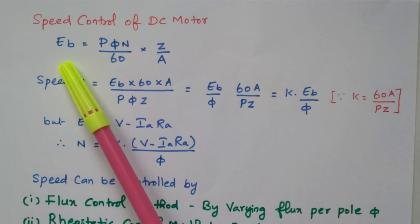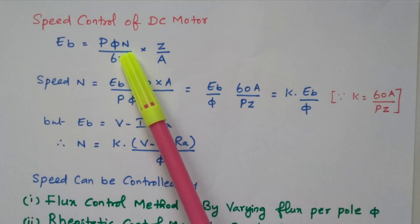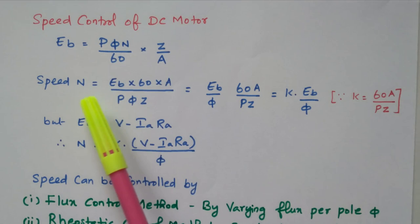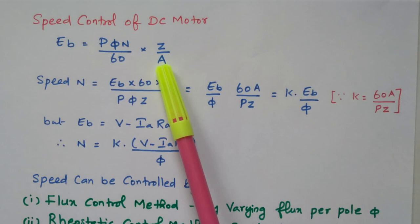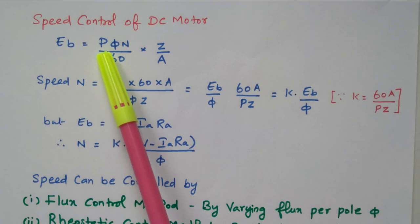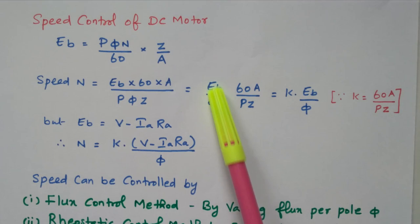Now we will see the expression for back EMF so that we can identify what parameters are related to the speed of the DC motor. The back EMF is given as P phi N divided by 60, into Z by A. By rearranging this we can find the expression for speed: N equal to EB into 60 into A divided by P phi into Z.